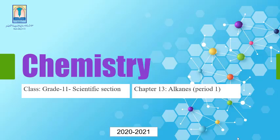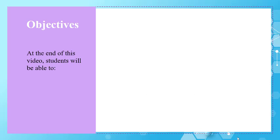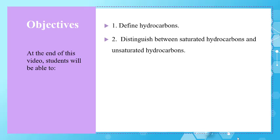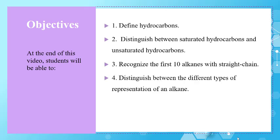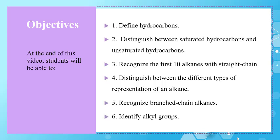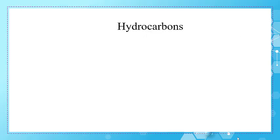Salam alaikum. Today we are going to start a new chapter which is alkanes. The objectives to be covered in this chapter are: define hydrocarbons, distinguish between saturated and unsaturated hydrocarbons, recognize straight chain alkanes, distinguish between different types of representation of alkanes, recognize branched chain alkanes, and finally identify alkyl groups.